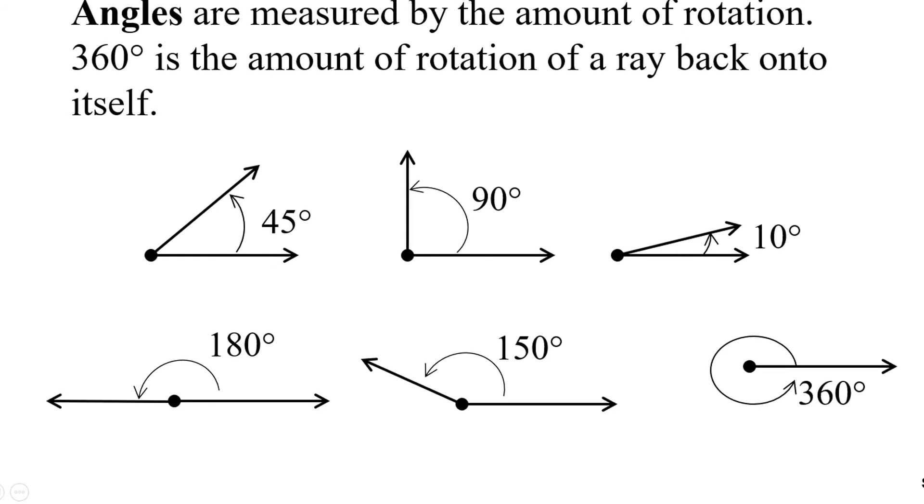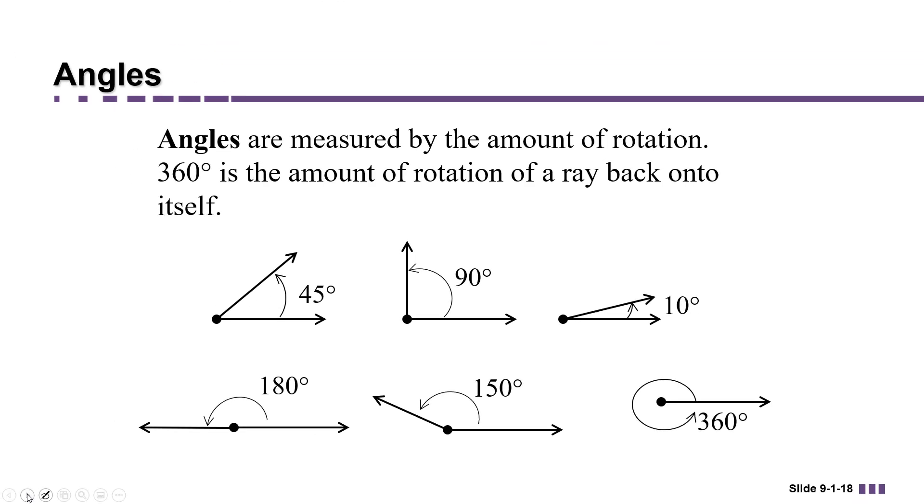We often categorize angles by their sizes. So if an angle happens to be between 0 and 90 degrees, we call that an acute angle. Acute means sharp to a point.